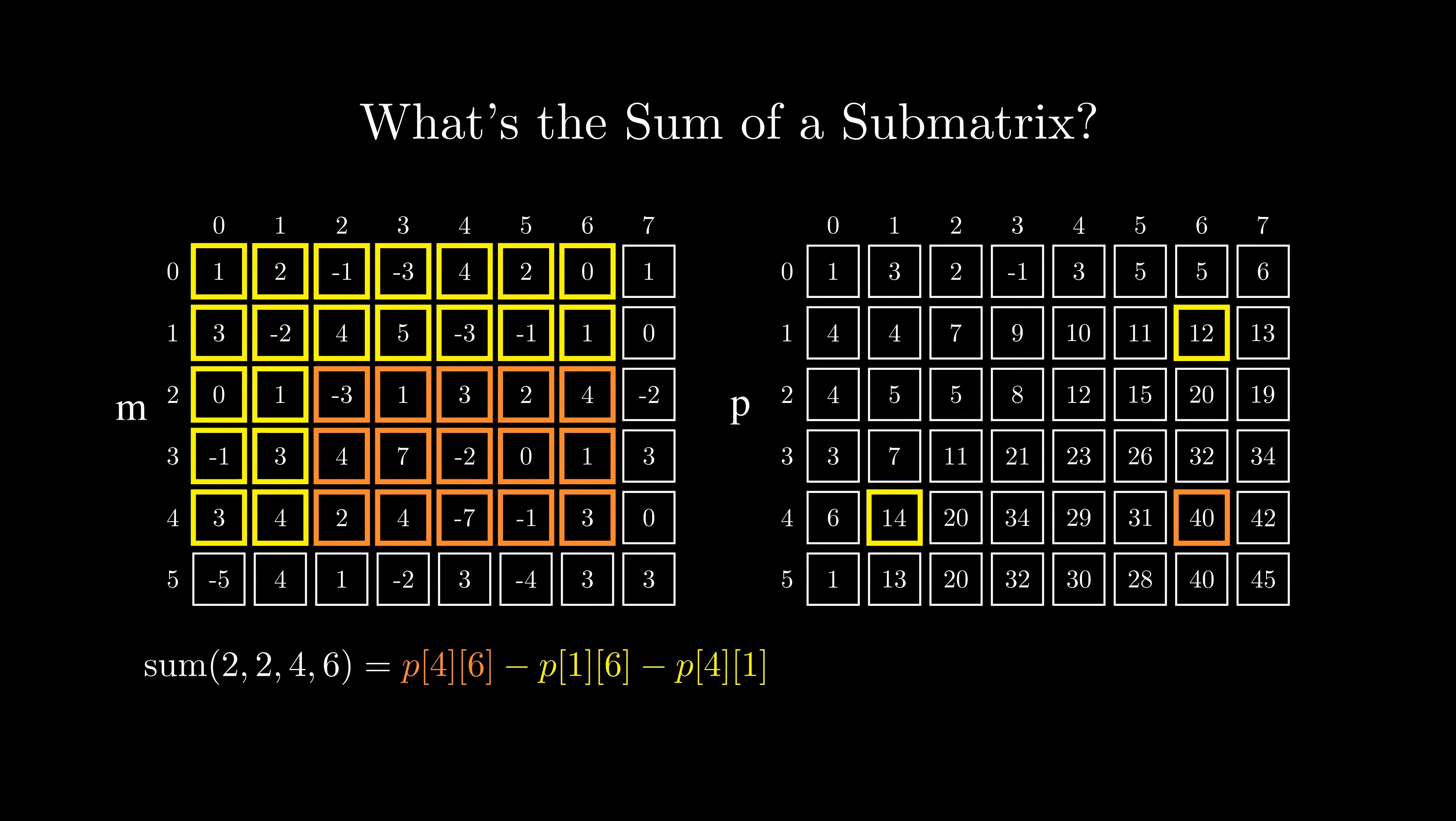But wait, as we subtracted the two rectangles, the top left part was subtracted twice, right? Well, luckily, we can just add that part back by adding the corresponding element from the prefix sum at location 1,1. So our answer became the bottom right corner of the rectangle in the prefix sum out of which we subtracted the bottom left and upper right corners and added the upper left corner again as it was subtracted twice.